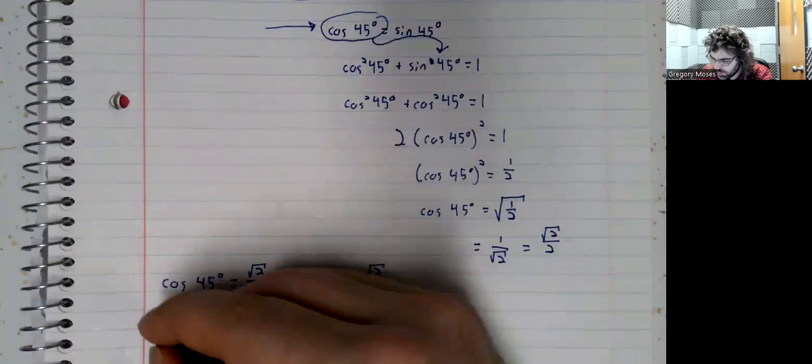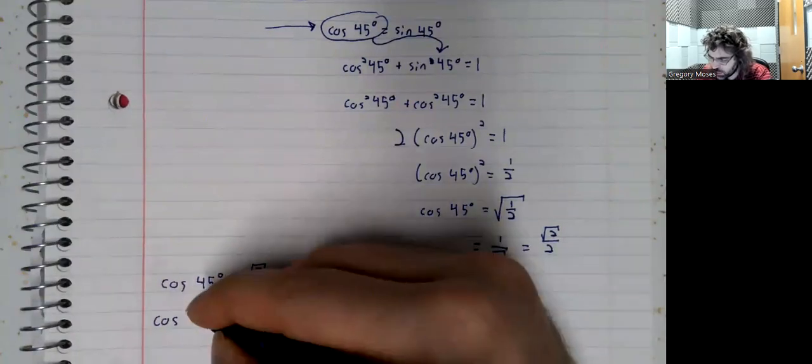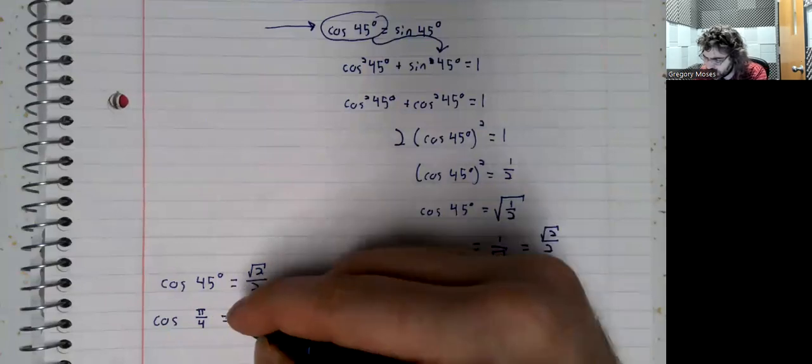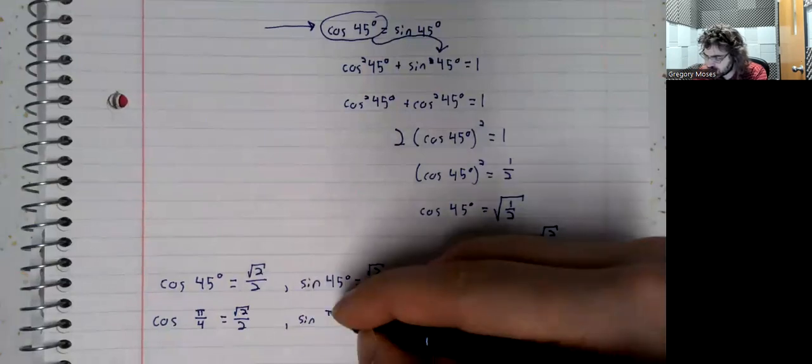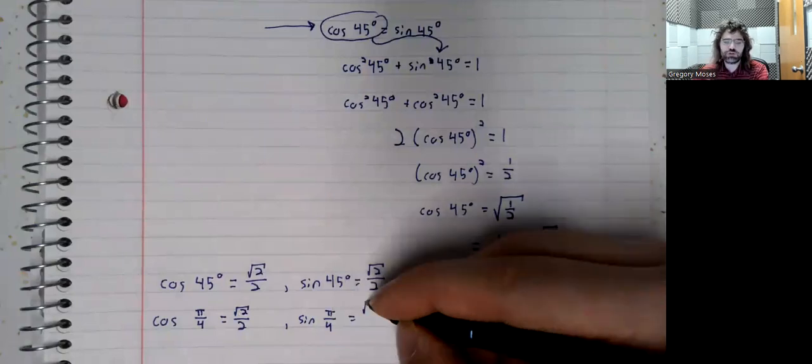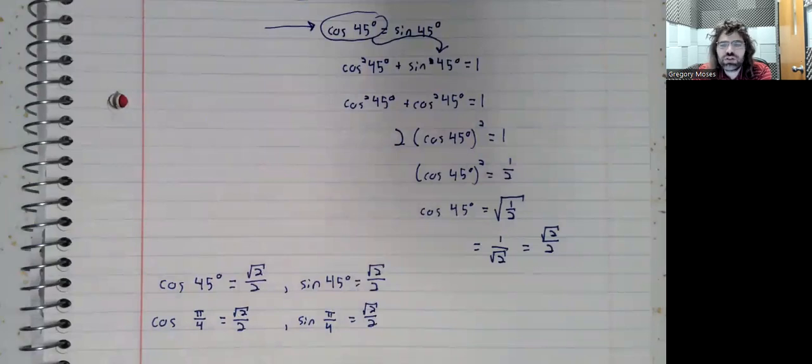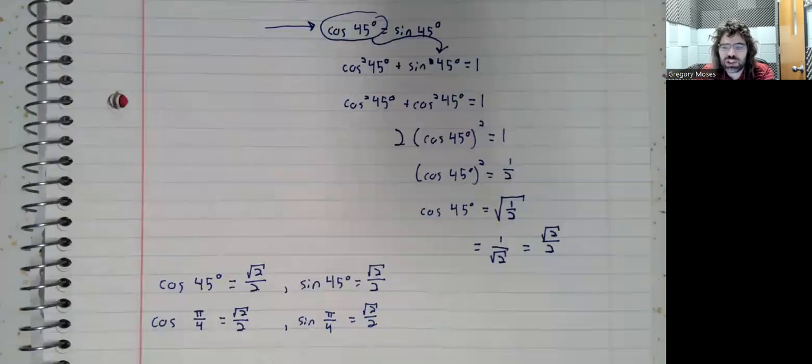And 45 degrees is pi over 4 radians. So we can repeat this using radians instead of degrees. And even though the square root of 2 over 2 is not a nice number, and maybe not the easiest thing to commit to memory, this is something that you are supposed to know. It will, in particular, assuming you're taking this to go on to calculus, which probably a lot of you are, your calculus professors are probably going to assume that you've got this memorized.